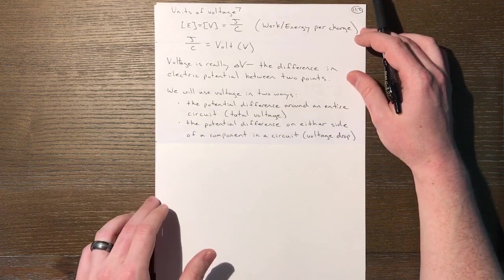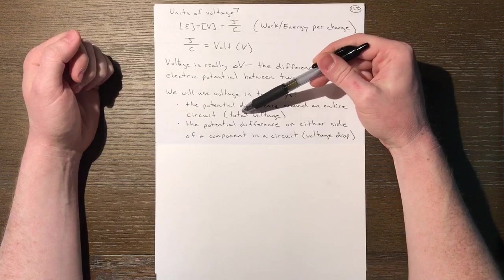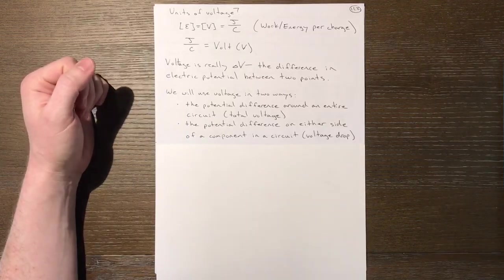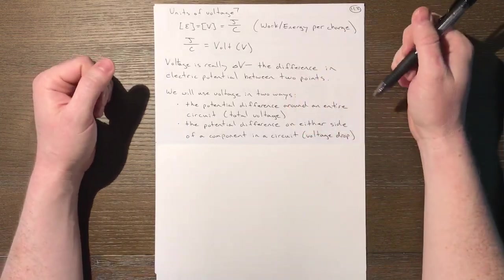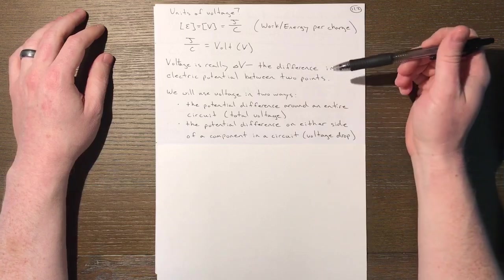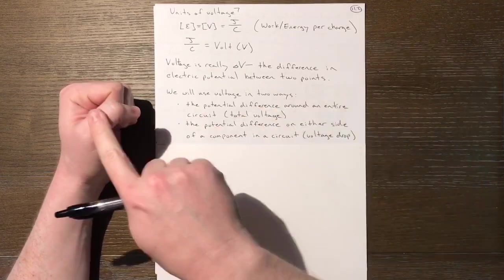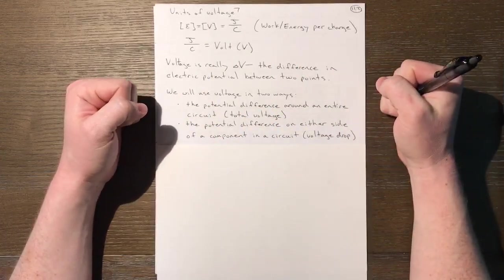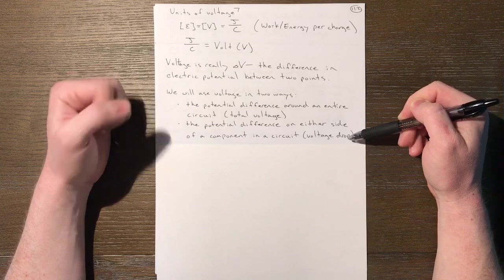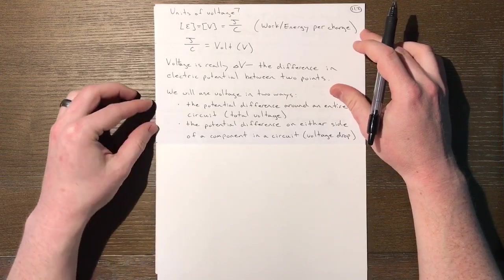There are two ways we'll apply voltage: as the potential difference around an entire circuit—total voltage or voltage of a battery from beginning to end. The other way is the potential difference across a resistor. You start with voltage on one side, cross the resistor, got another voltage on the other side. A difference final minus initial shows a voltage drop—you use up voltage across components.